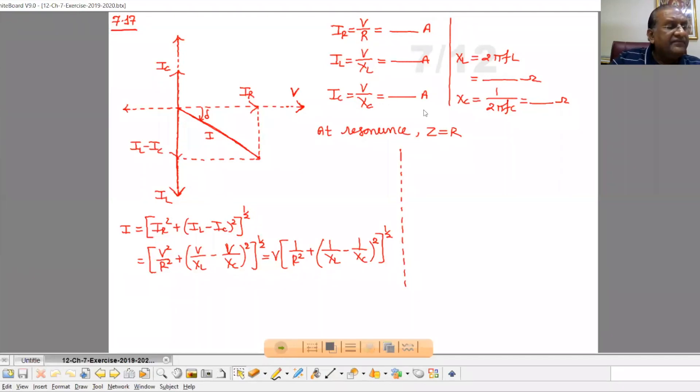At resonance, Z will be equal to R. At resonance, when Z equals R, it implies that the impedance of the circuit will be maximum. From this equation you can understand that when your impedance is maximum, then current will be minimum.